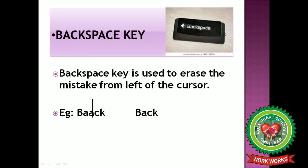The next key term is backspace key. It is used to erase the mistake from the left of the cursor. For example, I have typed the word 'back' and by chance a double 'a' is there. That extra 'a' is on the left side of the cursor. I press the backspace key and I get the correct word 'back'. So backspace key is used to erase the mistake from the left of the cursor.